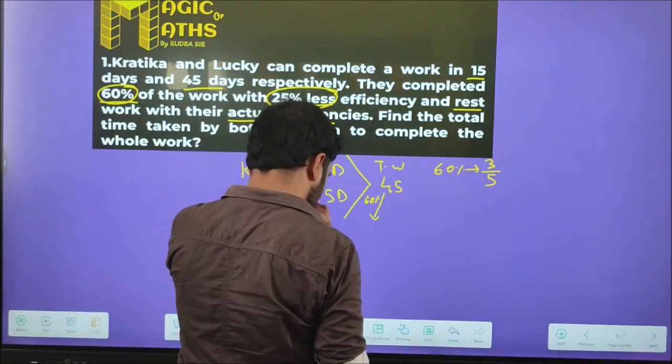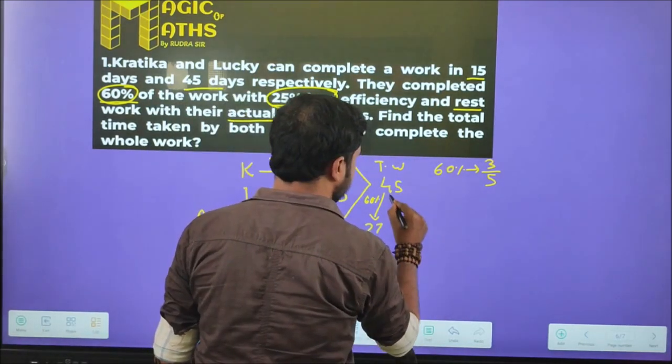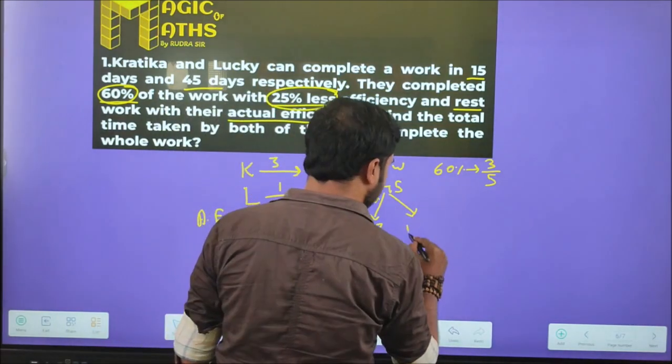So total work 60% means 45 times 3 equals 27. So 60% means 27. The rest part is 45 minus 27, so the rest of the work is 18.